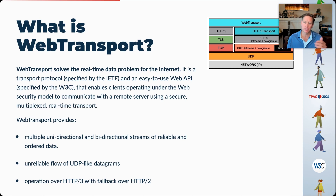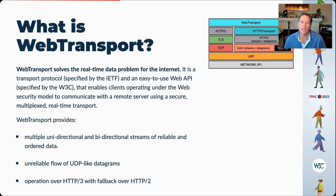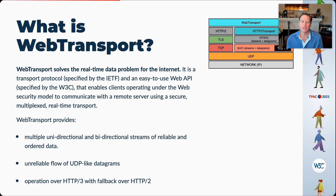If the data flow encounters a network that cannot support QUIC, your application will still continue to work, even though it might work a little slower. The network stack of Web Transport is shown in the upper right: Web Transport is built on top of the HTTP/3 transport, itself built on top of HTTP/3, which is built on top of QUIC, which incorporates TLS 1.3, all built on top of UDP for global compatibility.